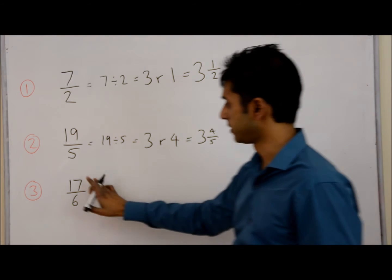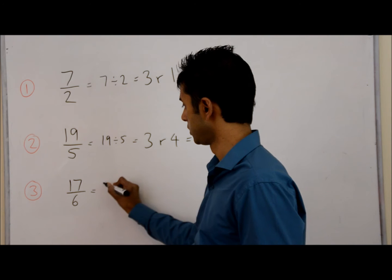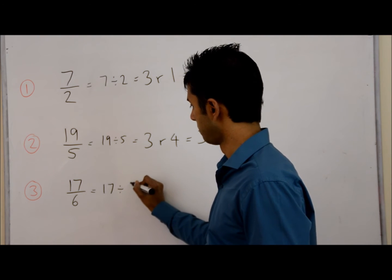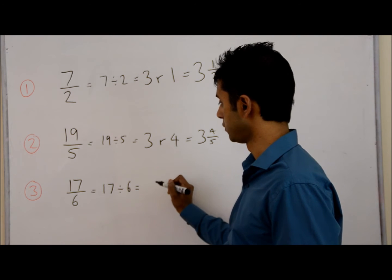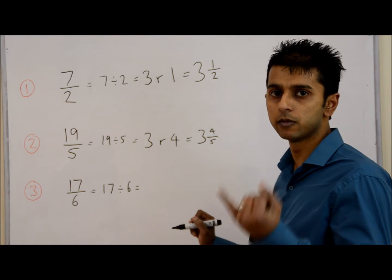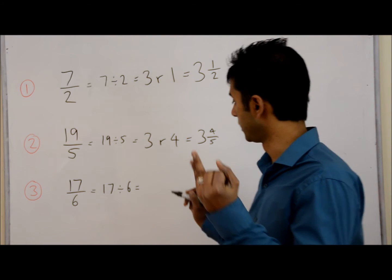And let's try this bottom one. 17 over 6, so we need to do 17 divided by 6. So 17 divided by 6, if you go through your 6 times table, 6, 12, 18 is too big, so it's just 2.